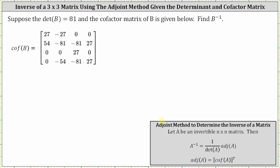The formula for the adjoint method is: A inverse is equal to one divided by the determinant of matrix A, times the adjoint of matrix A, where the adjoint of A is equal to the transpose of the cofactor matrix.